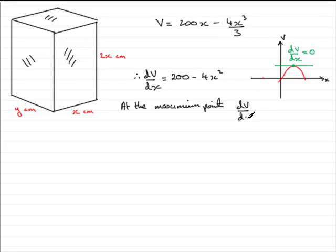Well, in fact, dV by dx would equal zero, whether it were at what we call a minimum point, when the curve bends like this, or just generally at any stationary point. So we've got dV dx equals zero. So therefore, we can put that 200 minus 4x squared equals zero.